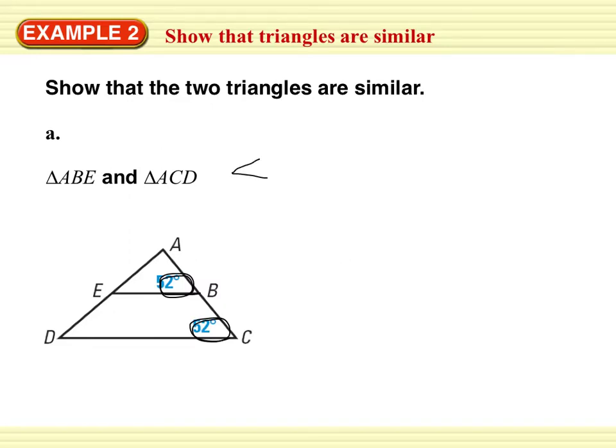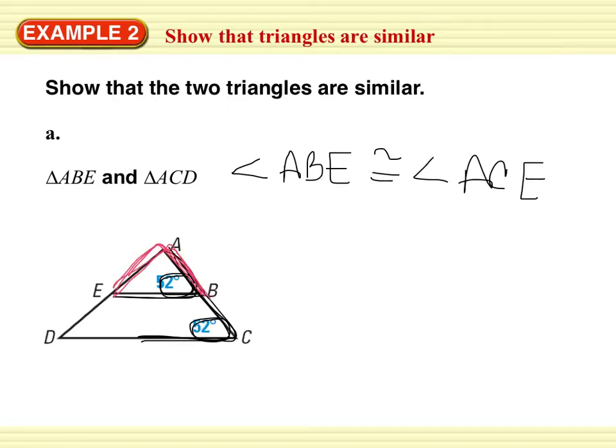Remember, angles you need to state with three letters. Angle ABE is congruent to angle ACE. We also know that angle A is congruent to angle A. As silly as that sounds, angle A is congruent to angle A. But it's true, they share the same tip. So angle A is congruent to angle A because they are reflexive.